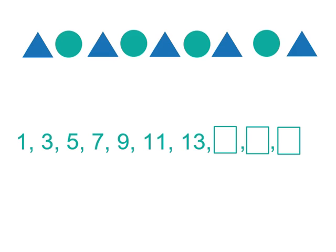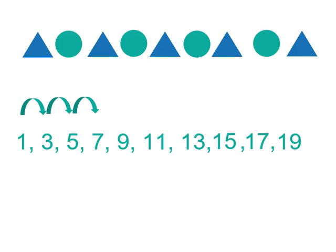With numbers like this, we look at how they change. So this pattern has our numbers increasing by 2. Sometimes it could be decreasing, but these are increasing by 2. So to continue the pattern, 13 plus 2 is 15, plus 2 is 17, plus 2 is 19.